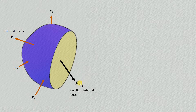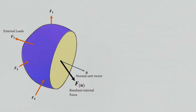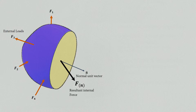The subscript n represents that this force is acting on a surface whose normal unit vector is n. This signifies which plane we are observing these internal forces on. We can think of this resultant internal force on the big cut surface as being made up of infinitesimally small internal resultant forces acting on smaller parts of the surface.